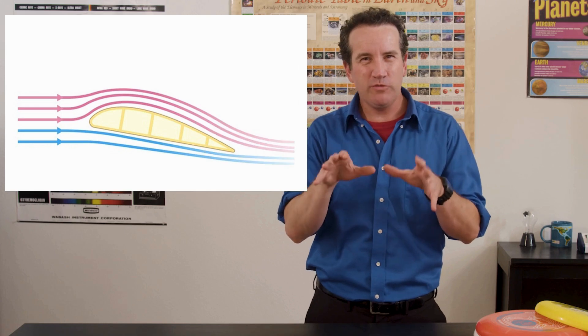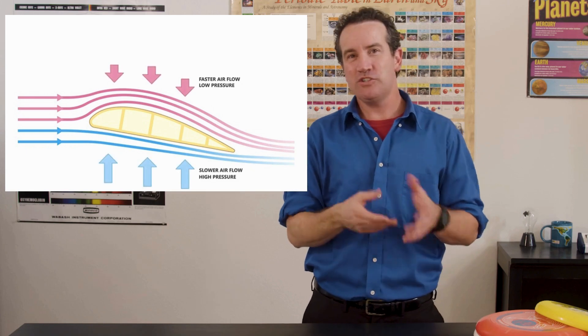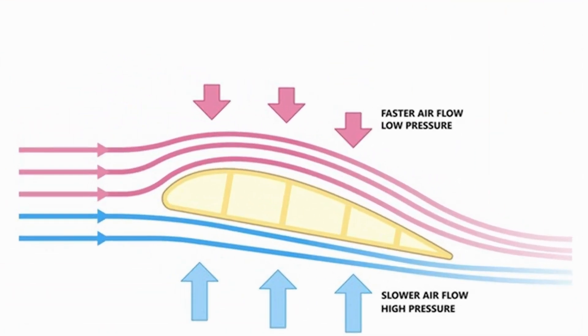That there is air moving faster over the curved wing's top than on the bottom and this generates a pressure difference which causes a net force upward. That's the lift.